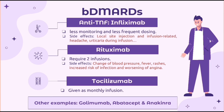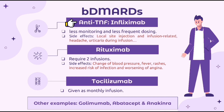For bDMARDs, the first example is anti-TNF agents, which include infliximab. These require less monitoring and less frequent dosing. Side effects include local injection site reactions, infusion-related reactions, headache, sepsis, and lymphoma. The second example is rituximab, which requires two infusions repeated every six months. Side effects include changes in blood pressure, fever, rashes, increased risk of infection, and worsening of angina. Both anti-TNF agents and rituximab should not be taken when the patient has an active infection. The third example is tocilizumab, given as a monthly infusion. Other bDMARDs include golimumab, abatacept, and anakinra.